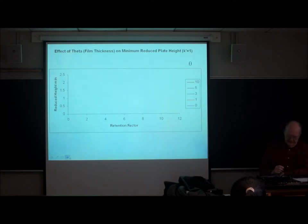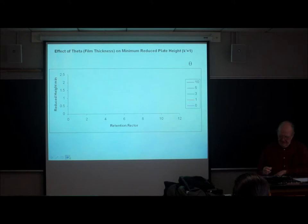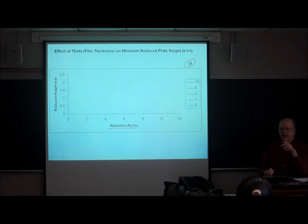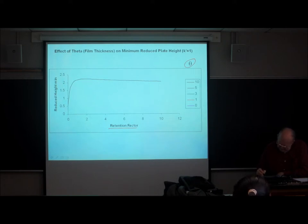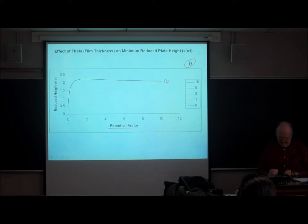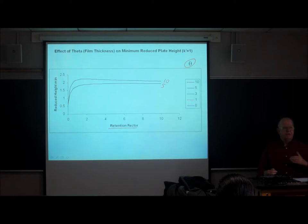The next thing to look at is our reduced plate height at the minimum in the Van Deemter curve, and then the reduced velocity at the optimum velocity, versus retention factor and as a function of the dimensionless reduced film thickness. Here's the curve of reduced plate height versus retention factor for a rather thick film — theta is 10. As we use a thinner film, the reduced plate height decreases, meaning the HETP is lower and you have more plates.